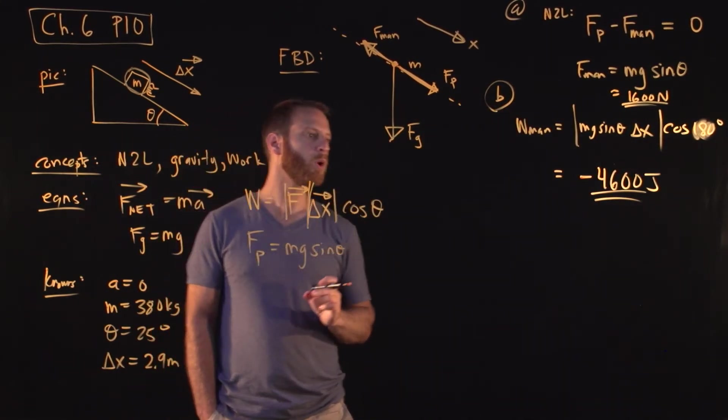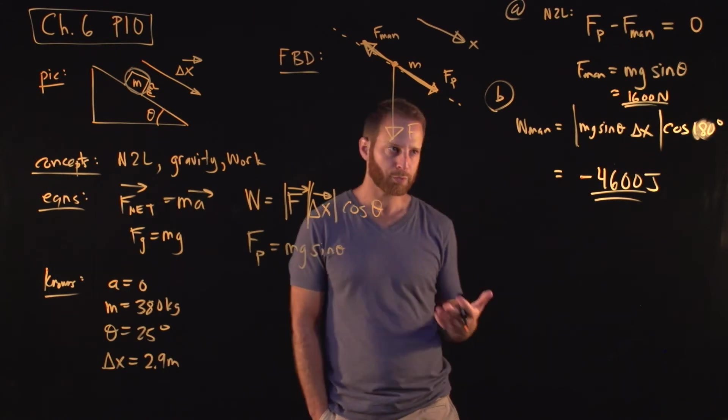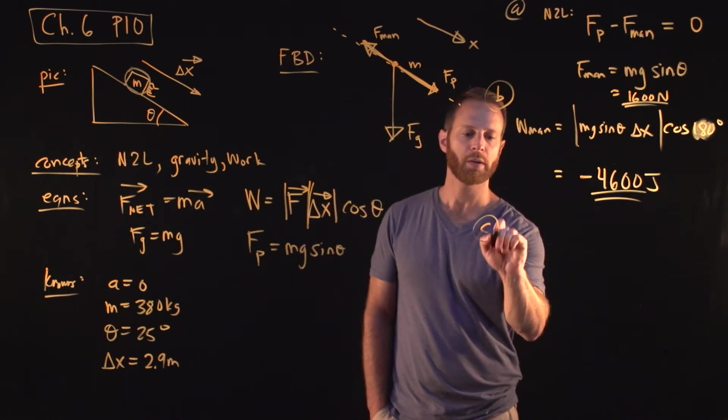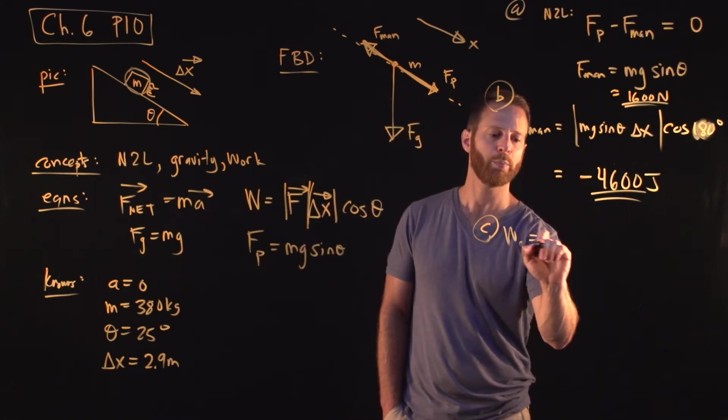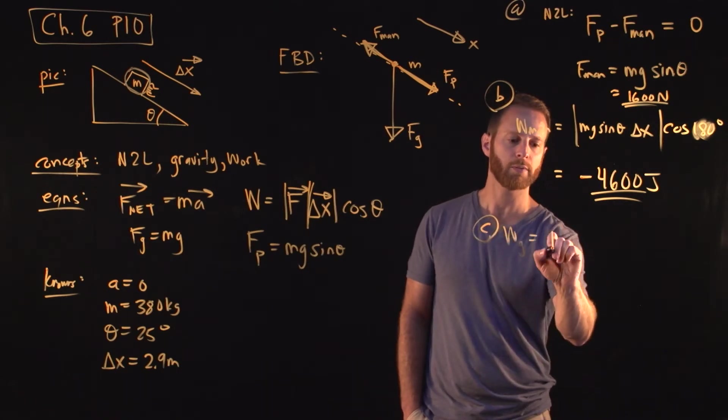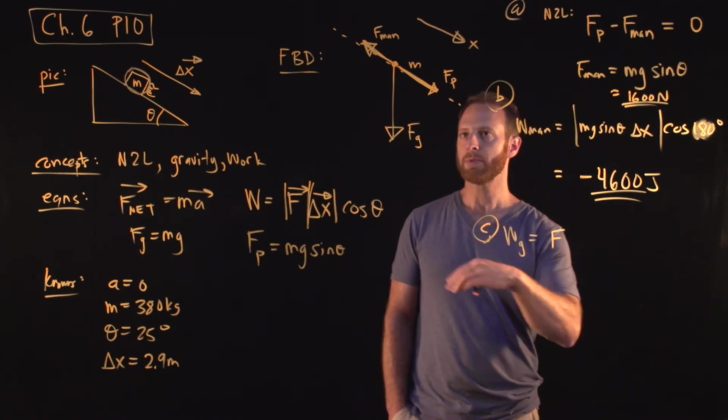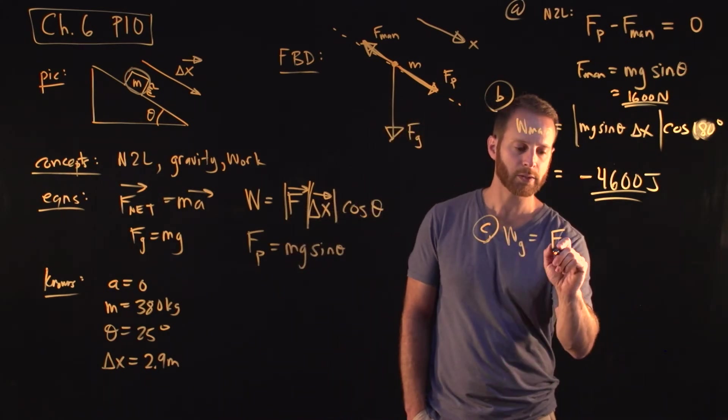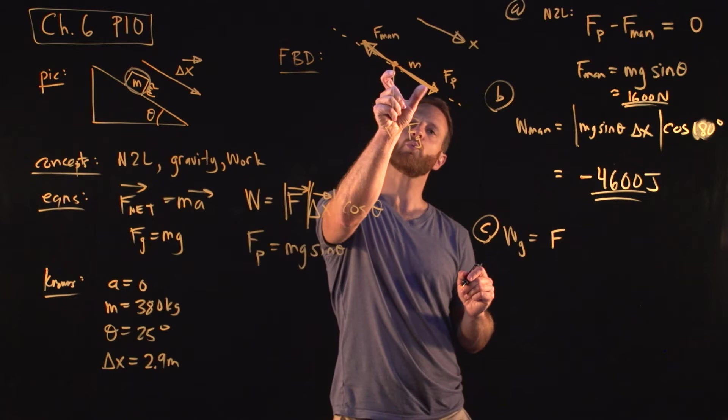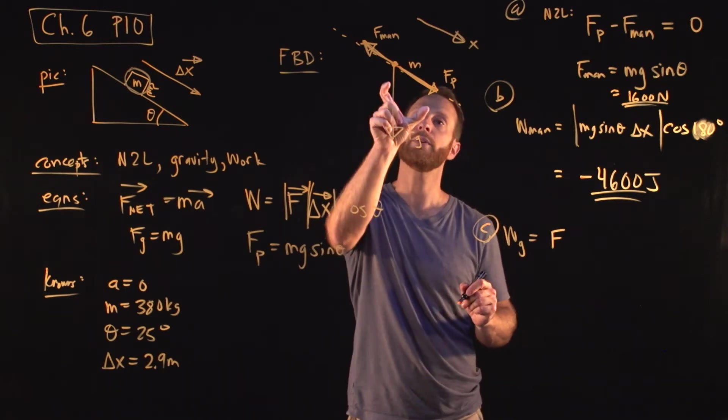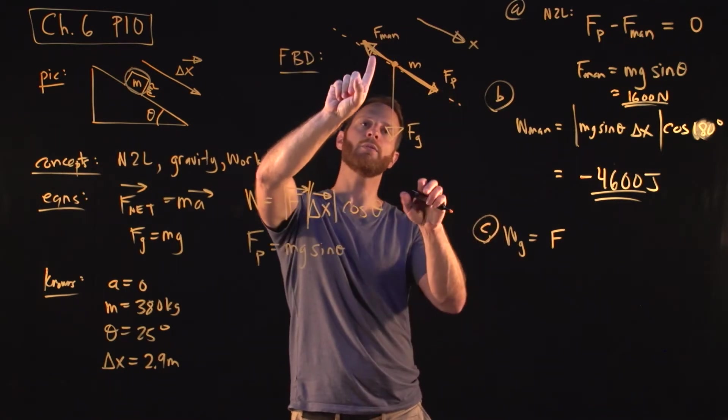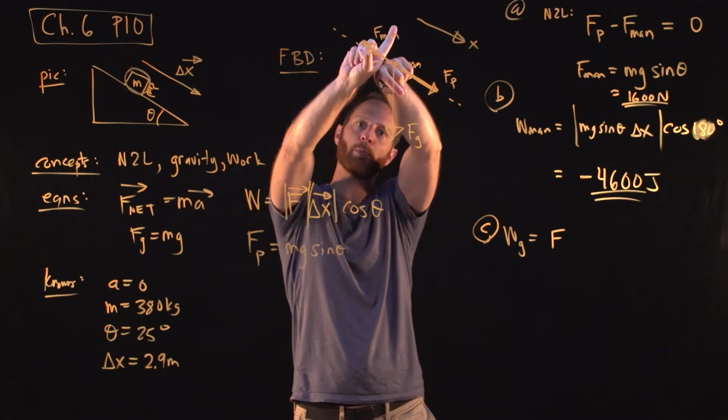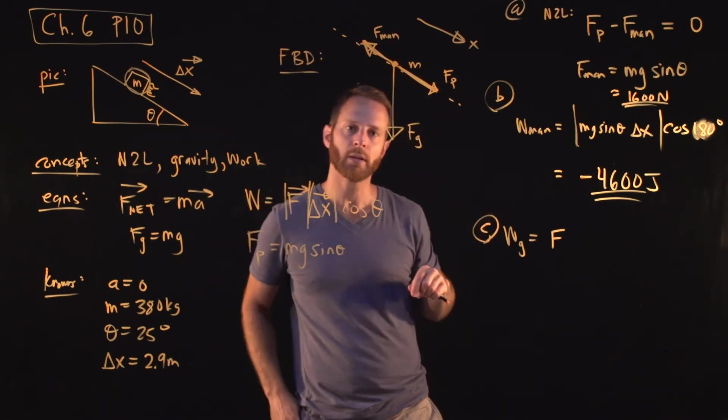Part C, we're supposed to figure out the work done by gravity. You might have an intuition for what it should be. The work done by gravity would be the force of gravity, whatever that is, times the magnitude of displacement times the cosine of the angle. But we can also write this as - really what we're interested in is how much work does the parallel component of gravity do, because the perpendicular component of gravity does no work, because it points perpendicular, and the cosine of that angle is zero.